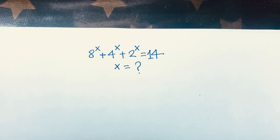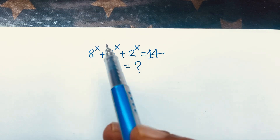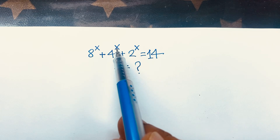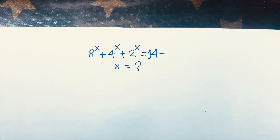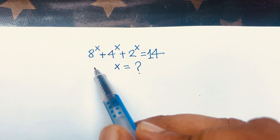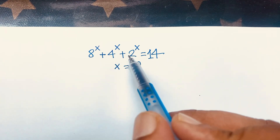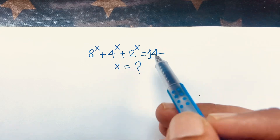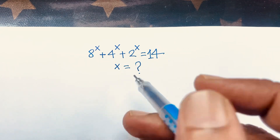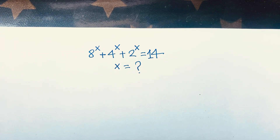So how to solve this question? If you think x is equal to 1, then 8 to the power 1 plus 4 to the power 1 plus 2 to the power 1, it will be 14. So 14 is equal to 14. So we can see x is equal to 1 in this math Olympiad question.